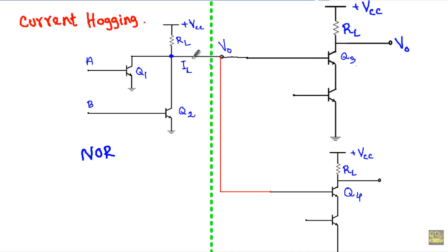In this video I will talk about the phenomenon of current hogging. Current hogging is a condition in which the largest amount of current flows through one of the many parallel logic circuits, because that circuit provides a low resistance path for current flow compared to other logic circuits. Let's say I have a DCTL NOR gate here.